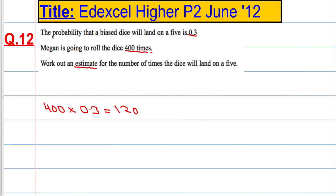So look out for the words probability and estimate. If you get that, take the number of times you do it and multiply by the probability it will happen.